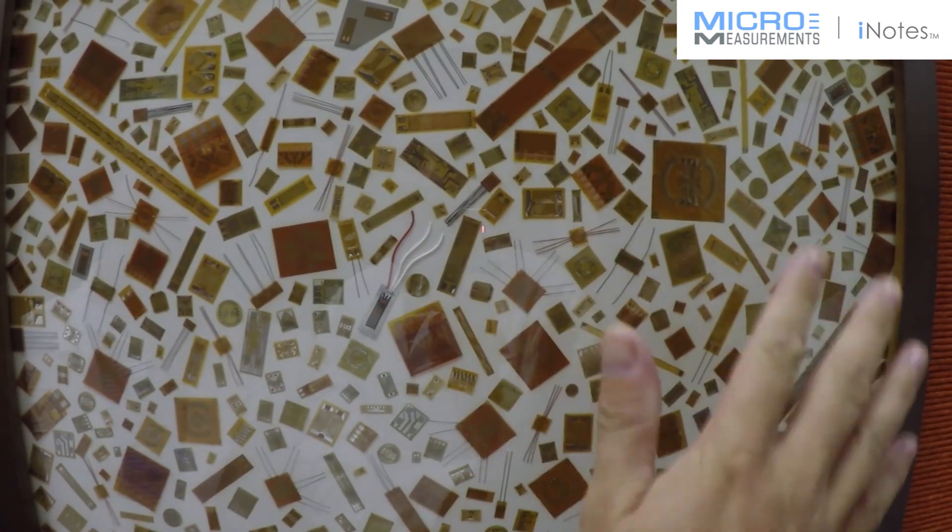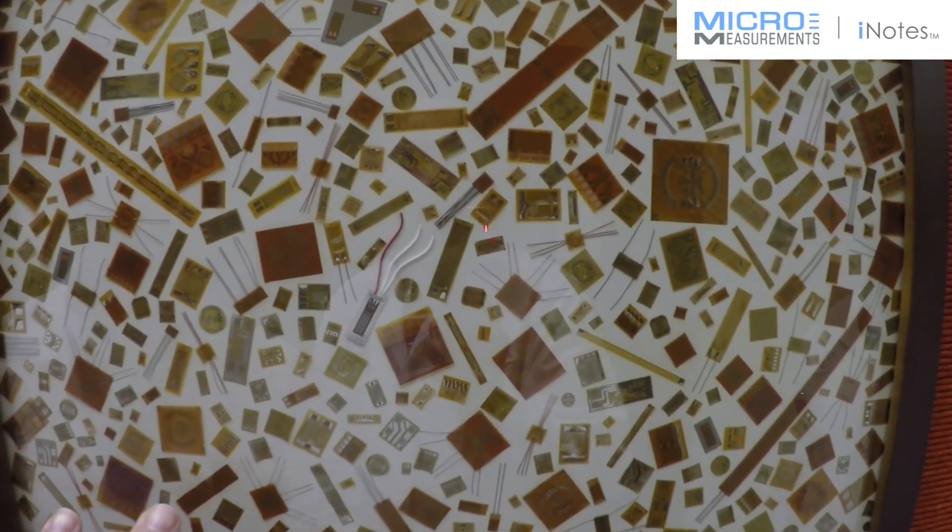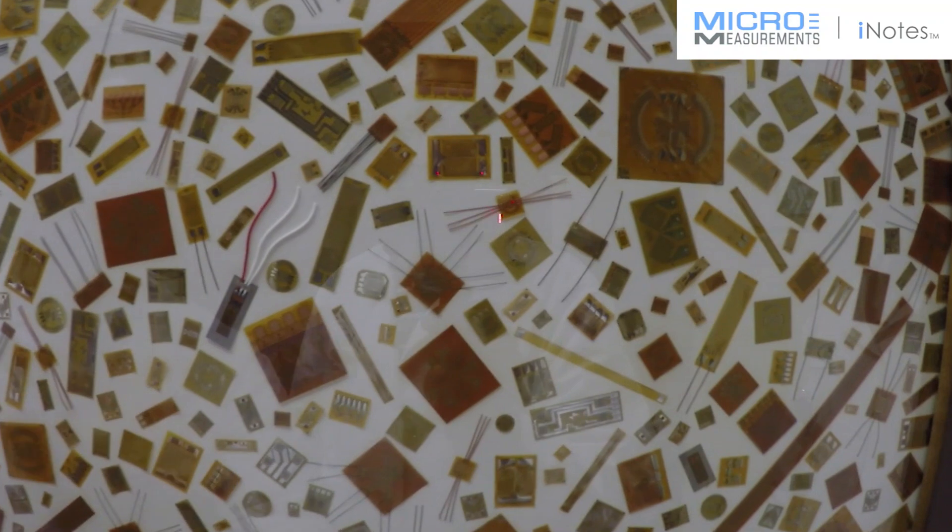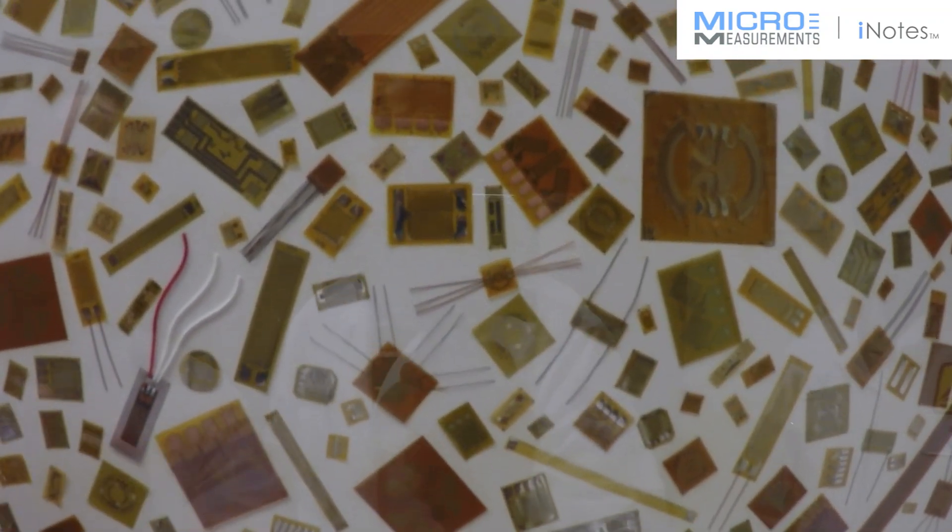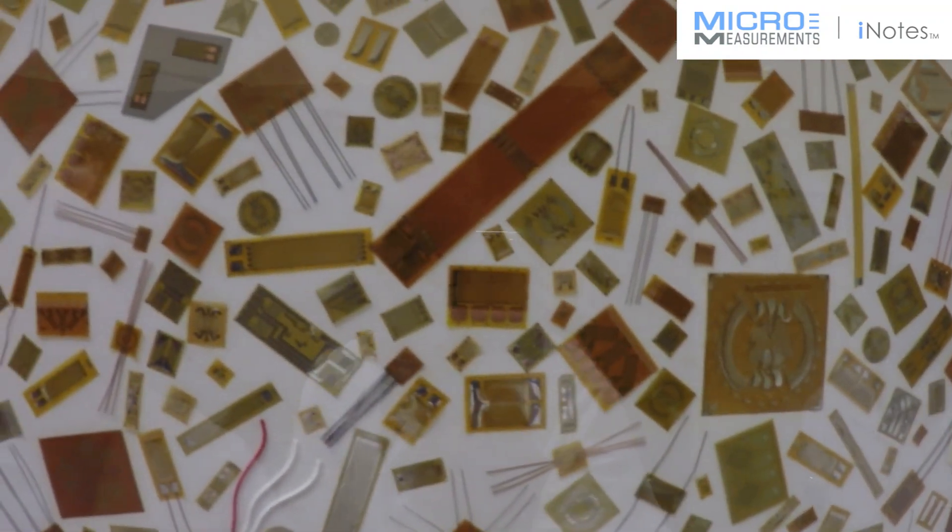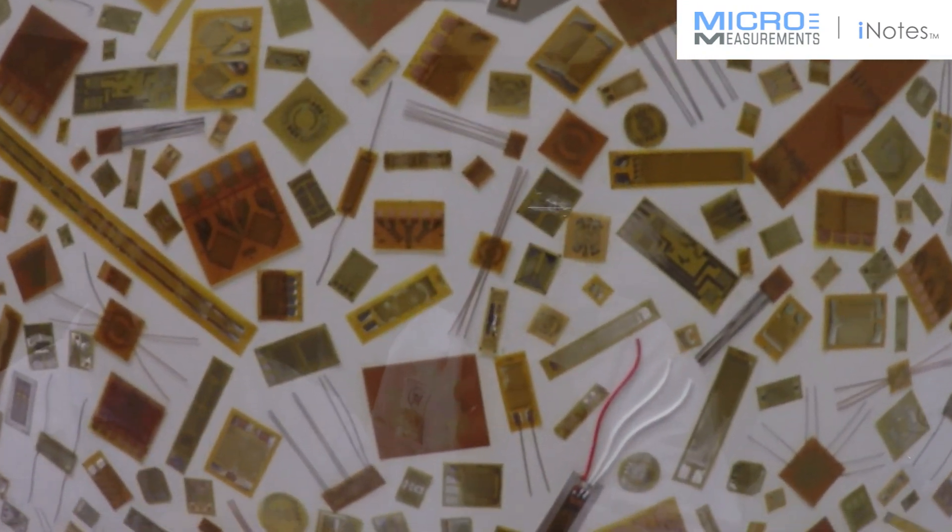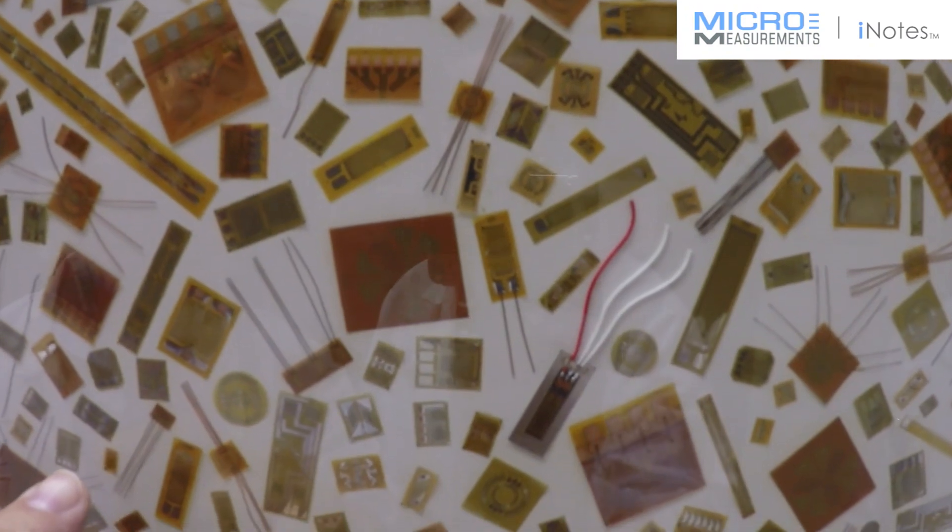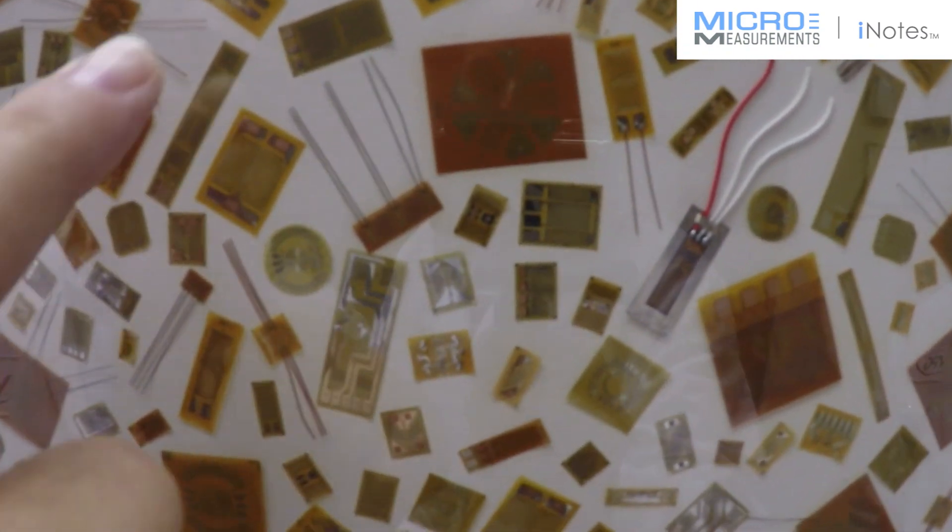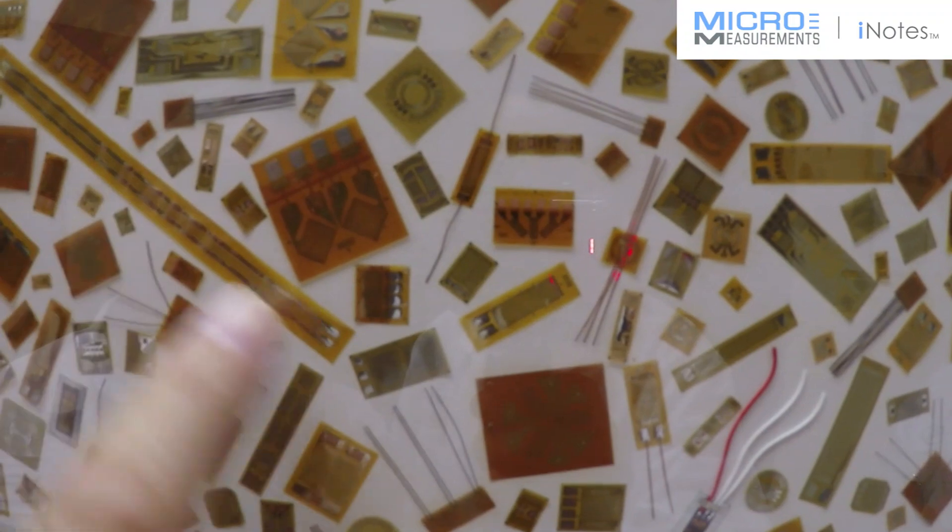As you scan around this demonstration, you'll see a collection of very small uniaxial strain gauges. We build uniaxials anywhere from eight thousandths of an inch active length, little small ones like this one, all the way up to strain gauges that are four inches long like this one here.